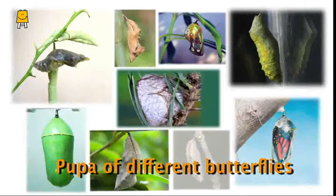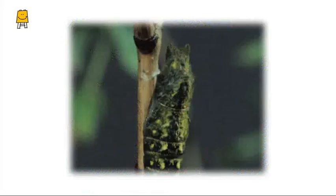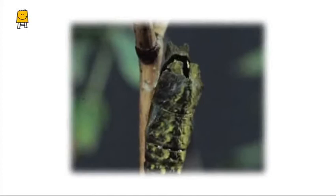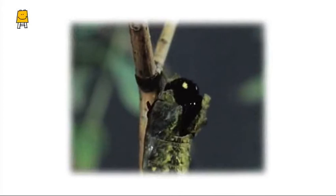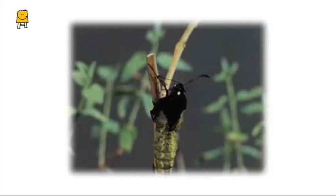In this state, the pupa doesn't move or eat. A few days later, the color of the pupa starts changing — the pupae of some butterflies even turn transparent. Then something unique happens: the pupa bursts and the butterfly comes out. Now it is an adult; its development is now complete.